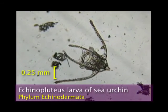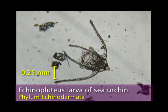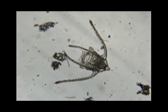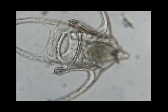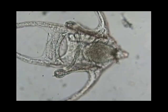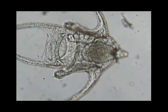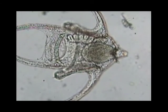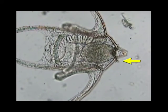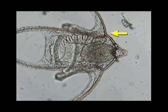The sea urchin larva drifts in the plankton for several months before developing into the benthic adult form. Internal skeletal rods made of calcium carbonate support the long arms.